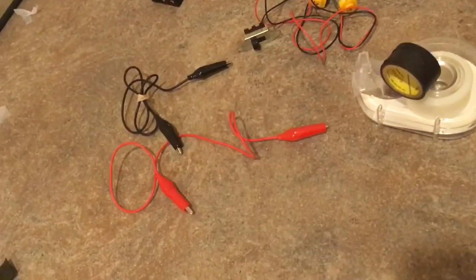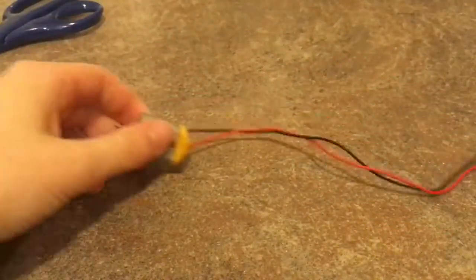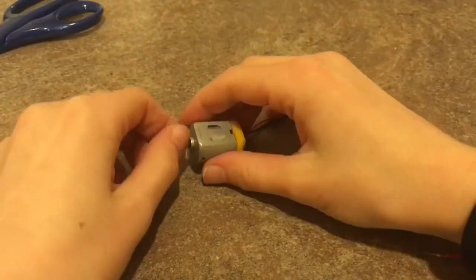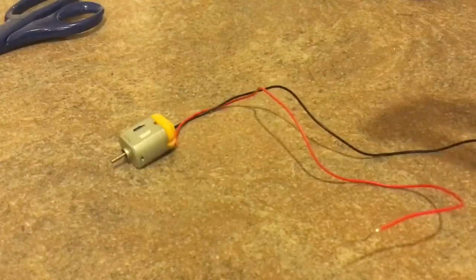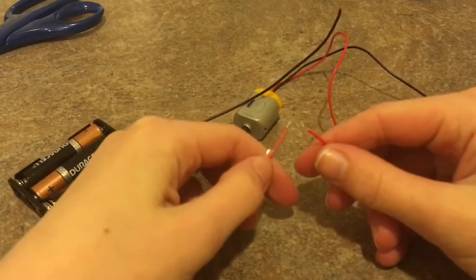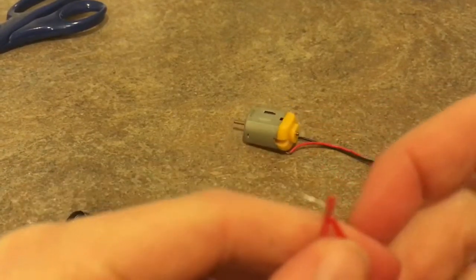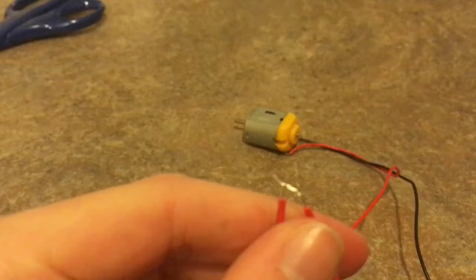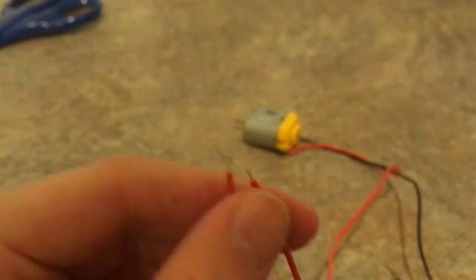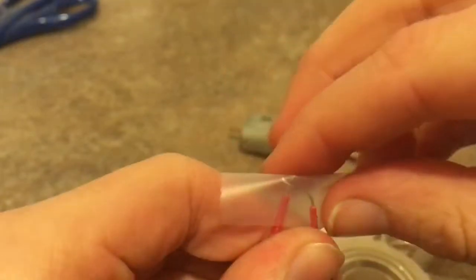You'll also need wires with alligator clips. Okay, so to start off we're pretty much going to make this super simple circuit mark 2. We just get a motor, the battery pack, find the two red wires, and you just want to make a crisscross, like an X, and tape over that.